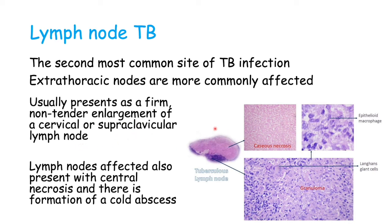If we look at a lymph node, we will see that same presentation as in lung tissue — caseous necrosis and the formation of granulomas. Here we can see another Langerhans giant cell with that horseshoe shape and some epithelioid macrophages. Lymph nodes affected also present with central necrosis, and there is formation of an abscess.